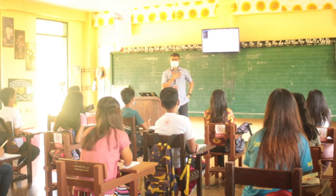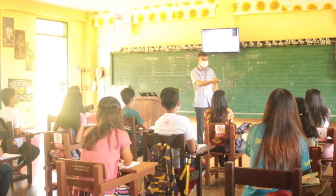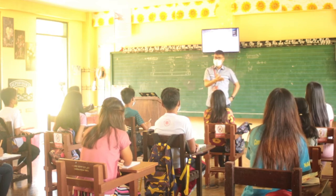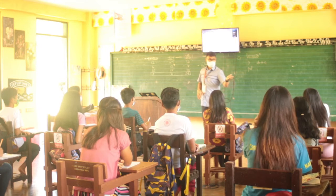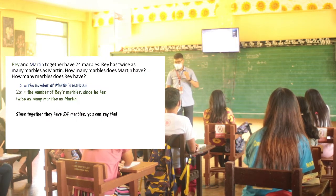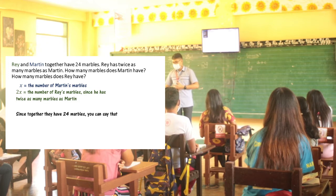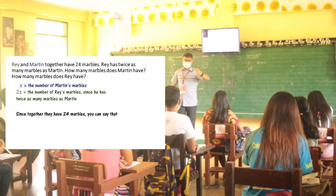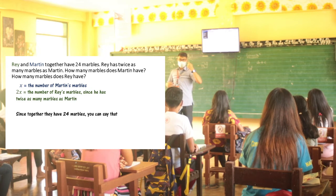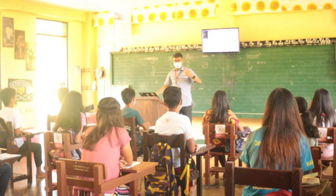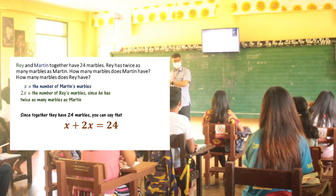What's the other given in the question? 24. That 24 is the total — Ray and Martin together have 24 marbles. So Martin plus Ray is equal to 24. Using our variables, X is Martin and 2X is Ray. Therefore: X plus 2X is equal to 24.